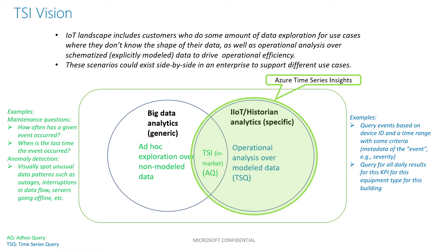The second pillar is that customers model their environment and their data. They want to contextualize the raw telemetry coming from sensors with that model data, and then query data based on devices or assets — because now they know the shape of their data — to drive operational efficiency. The third pillar is the ability to do computations or calculations as data streams in: converting Celsius to Fahrenheit, doing complex math and aggregations, scheduled calculations, or calculations over streaming data. Those are the three big pillars we've heard time and again from industrial IoT customers.